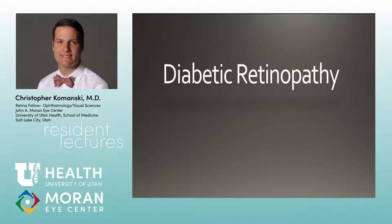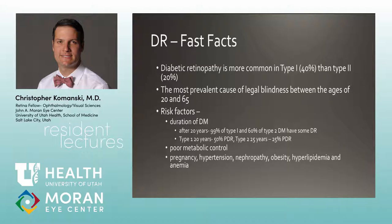We'll get started on diabetic retinopathy, which is really fun to treat because it's so diverse in its presentation, phenotype, severity, and how we can treat it. Diabetic retinopathy is most common in type 1, with 40% of patients developing it, versus type 2 at 20%. It's the most common cause of legal blindness between ages 20 and 65 in the United States — working-age people trying to raise children — so protecting their vision is particularly important to society.